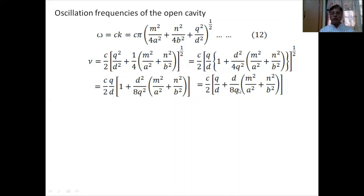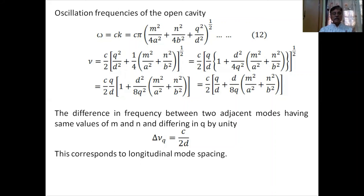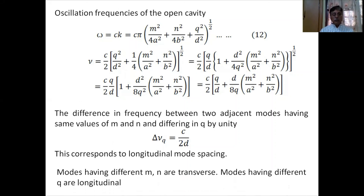The separation between two consecutive longitudinal modes is C/2D. This is the longitudinal mode spacing. Modes with different M and N are transverse modes; modes with different Q are longitudinal modes.